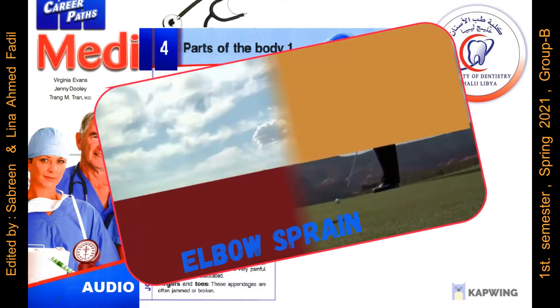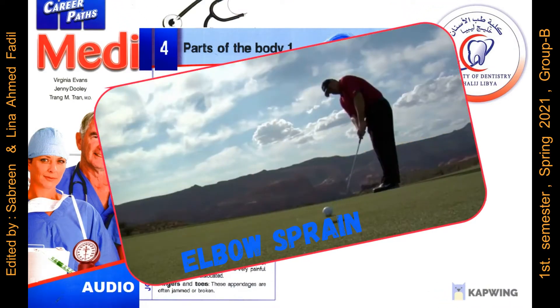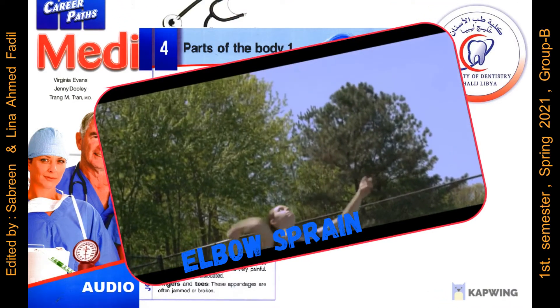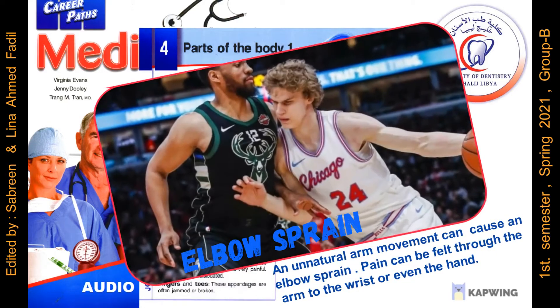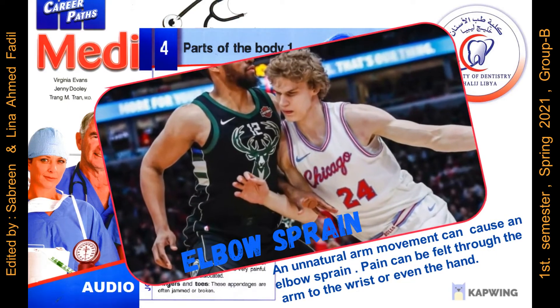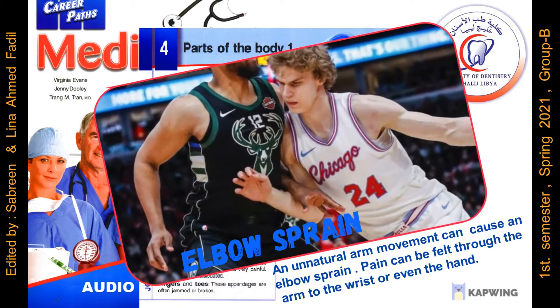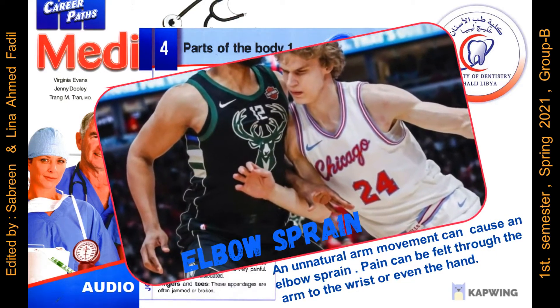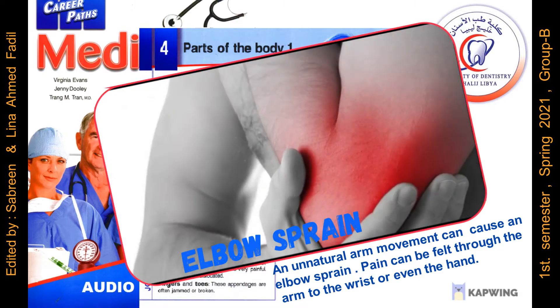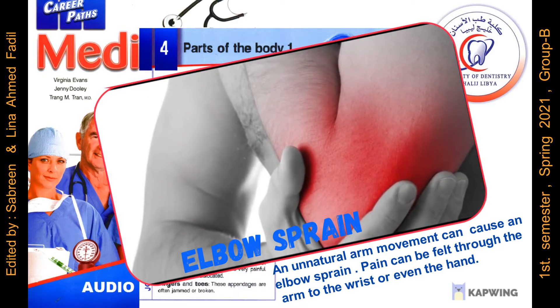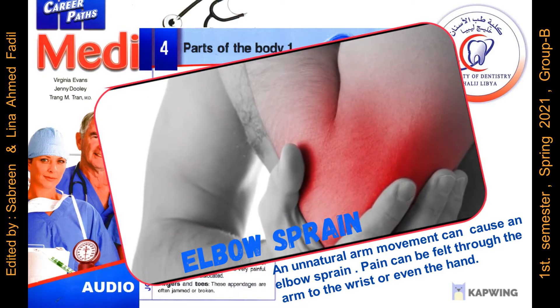Elbow Sprain. An unnatural arm movement can cause an elbow sprain. Pain can be felt through the arm to the wrist or even the hand.